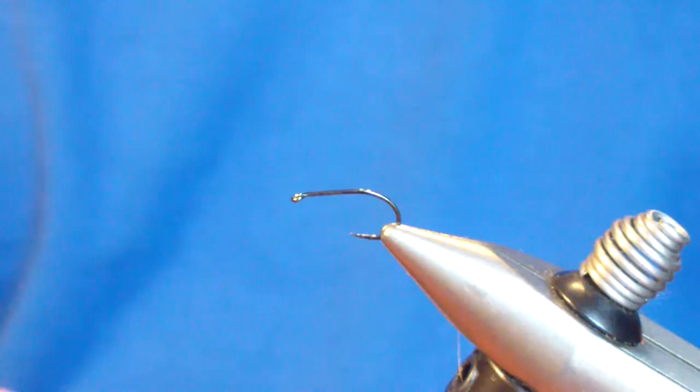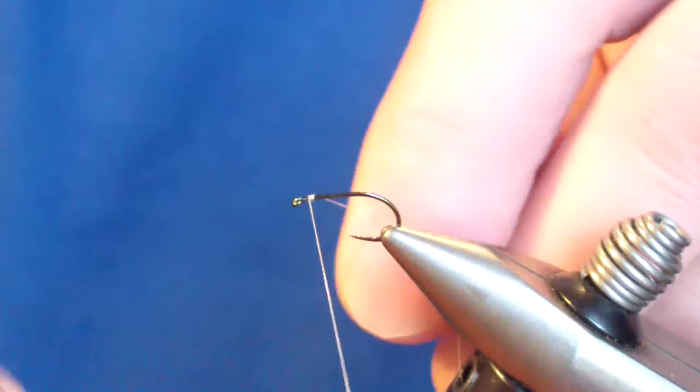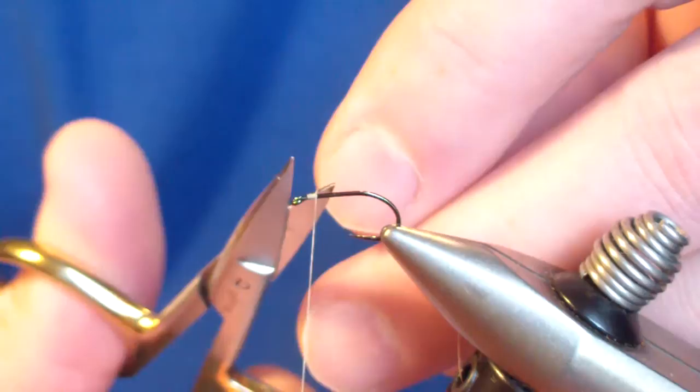The hook we start out with is a wide gape Orvis Tactical, and we're going to be using ADOT tan uni thread. We'll start our thread just about an eye length behind the eye.